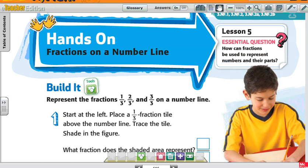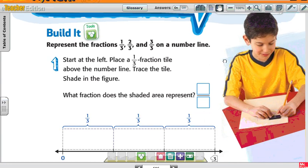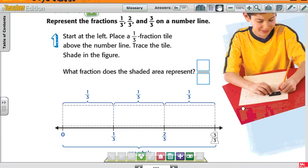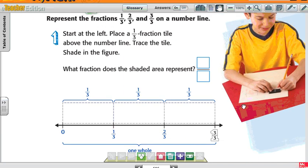Okay, Chapter 10, Lesson 5. It says hands-on, fractions on a number line. It says represent the fractions one-third, two-thirds, and three-thirds on the number line. Start on the left. Place a one-third fraction tile above the number line. So here's a number line.